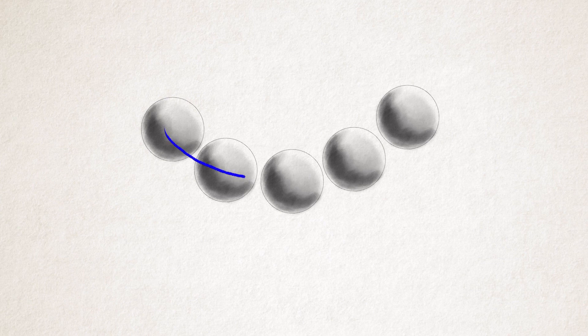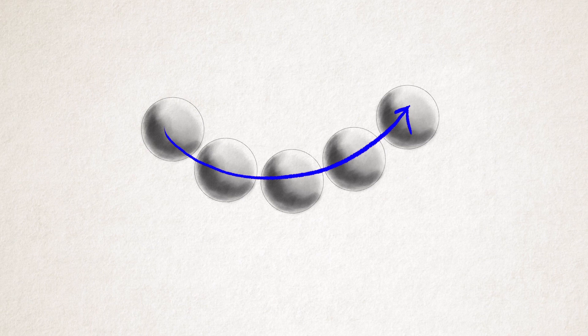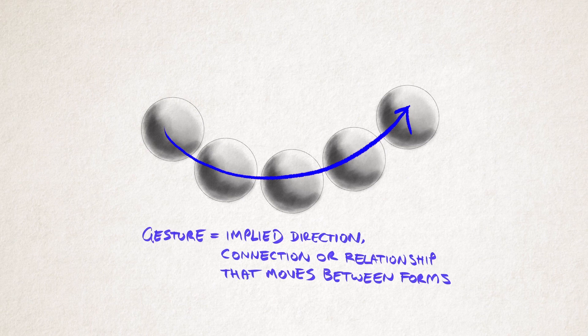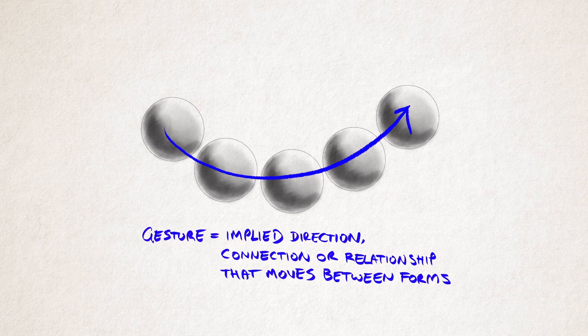What we are going to notice with these spheres is that there's an implied directional movement they make as a group together. So, we can define gesture as an implied direction, connection or relationship that moves between a series of forms.